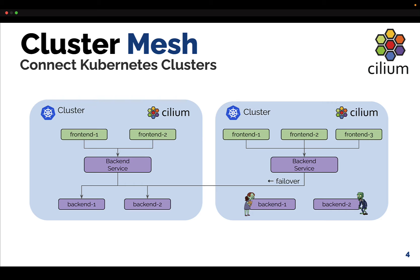This is an example of connecting multiple Kubernetes clusters together with ClusterMesh. In this case, two Cilium clusters configured with a frontend and a backend. There is a backend service to provide connectivity to the backend endpoints for the frontend endpoints. Using ClusterMesh, you can announce those endpoints and their available IPs across your cluster towards other clusters, meaning that the service will provide connectivity to endpoints across clusters.